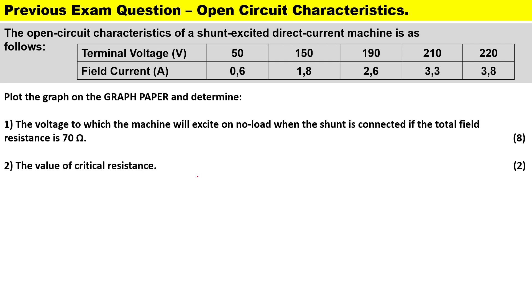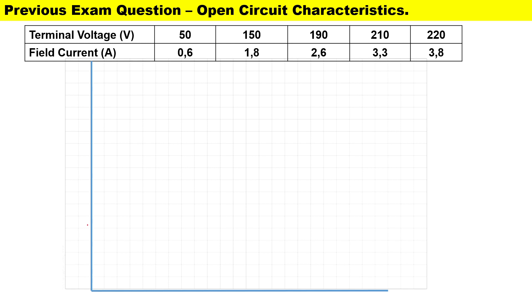The first thing we do is we draw our horizontal and vertical axis. We'll plot the terminal voltage on the vertical axis and we'll plot the field current on the horizontal axis. You just need to choose a scale. Everybody's scale will be slightly different.